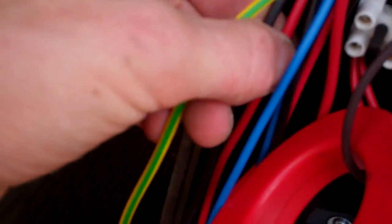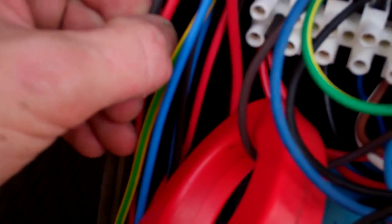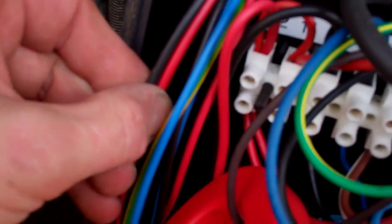Right, let's have a quick look at the control circuit on this. You've got a red and black 2.5mm, that's your main powering to run the compressor and the fan motor.